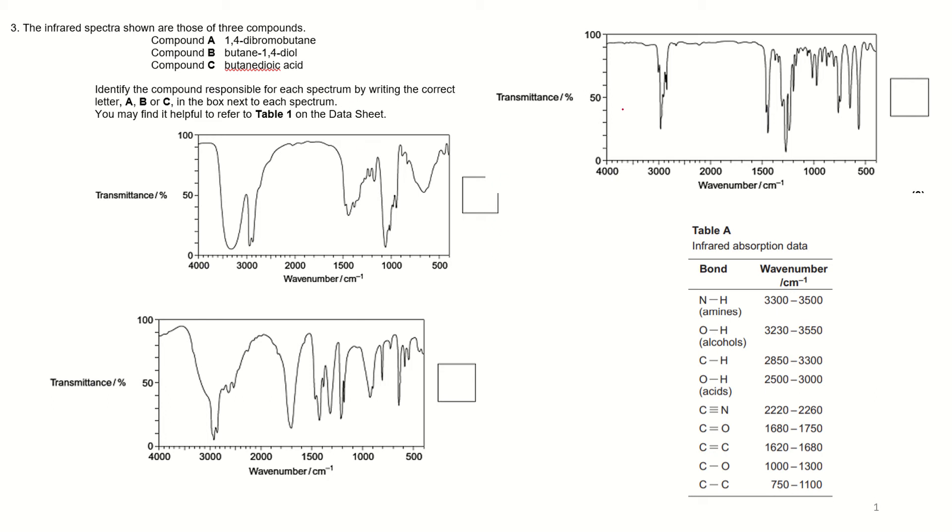So the first question we've got here, we've got three spectra and I'm trying to spot which is which of the three substances showing up here. Now the thing that I would do initially is I would actually draw the three molecules out. They're all based on the four carbon chain. I've got the 1,4-dibromo, 1,4-diol, and the butyne-dioic acid.